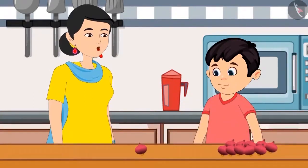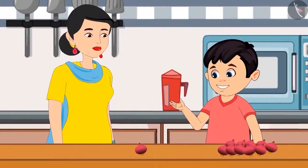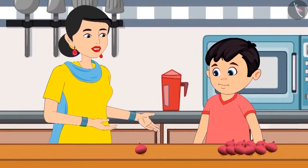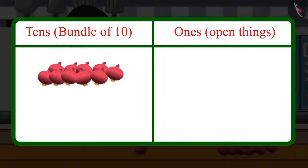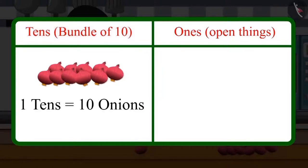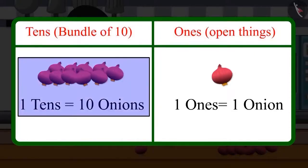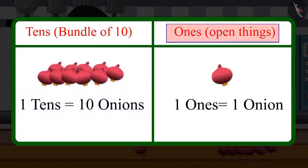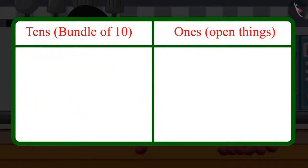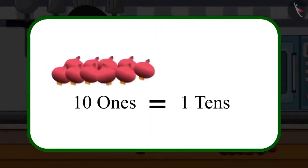Yes, Choto. Do you know how else we can write 11? No, Mommy. How do we write it? Come on, let me explain it to you. When we make a group of 10 things, then this group is called 10s. And the open things are called 1s. So by that, we mean 10 means a group of 10, and 1s means 1 — that is, open things. And when there are 10 1s, then they make 1 ten.